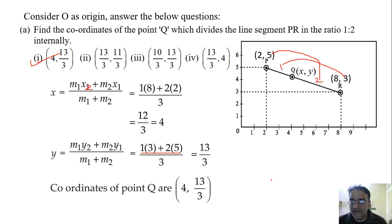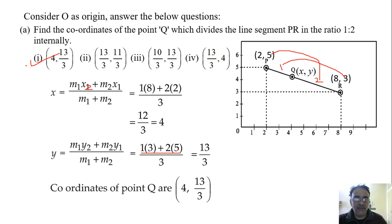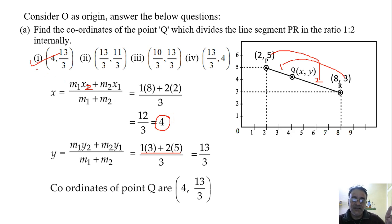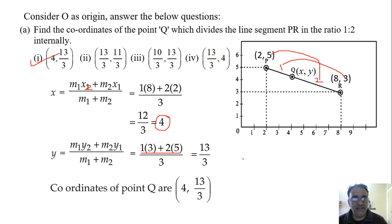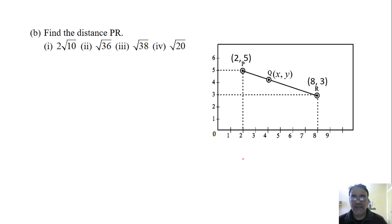While solving multiple choice questions, as soon as you get a clue — for example, when we identified x = 4 — you can stop solving further and directly tick that option. So the first option is correct. Now we'll move to the second question.